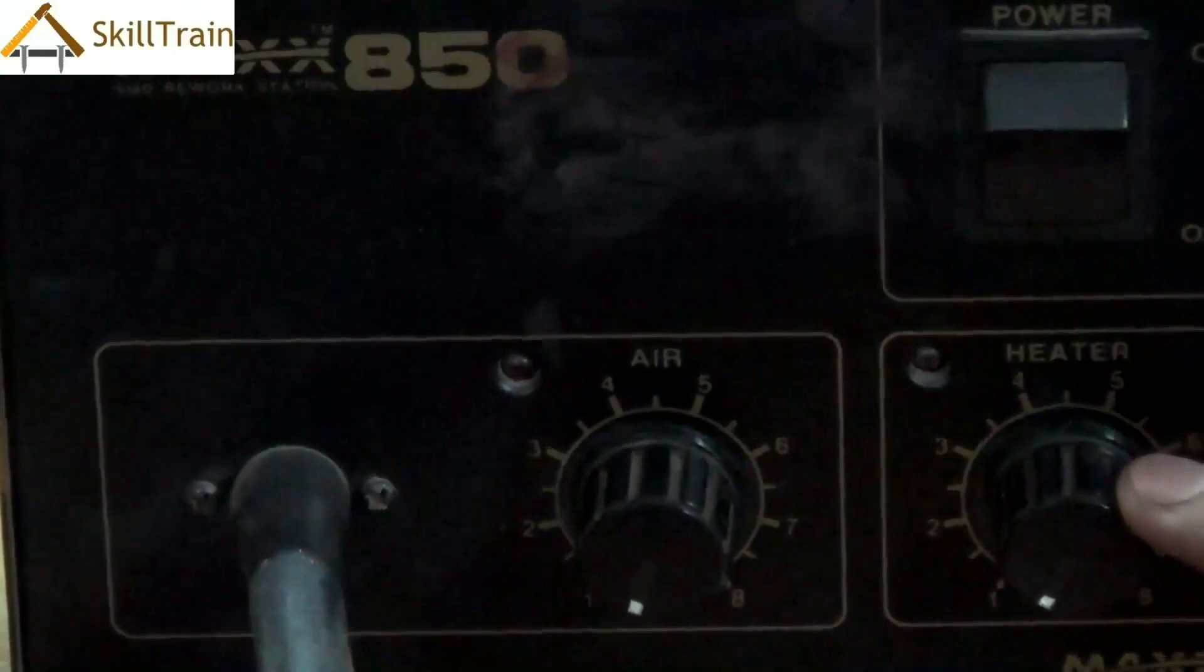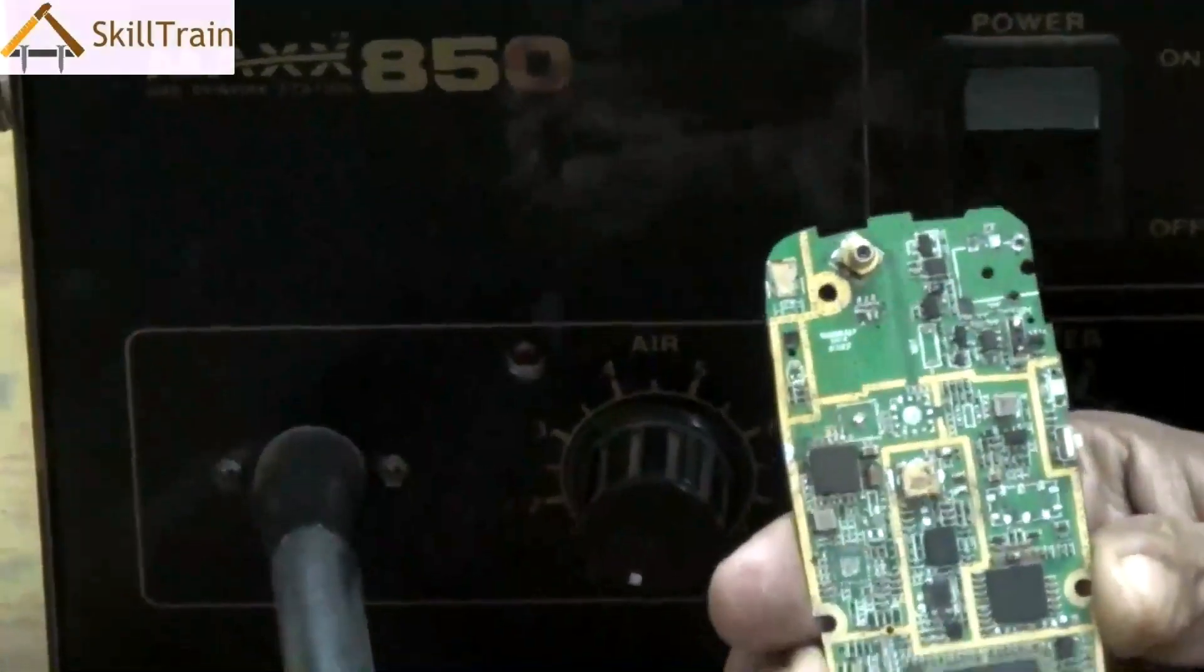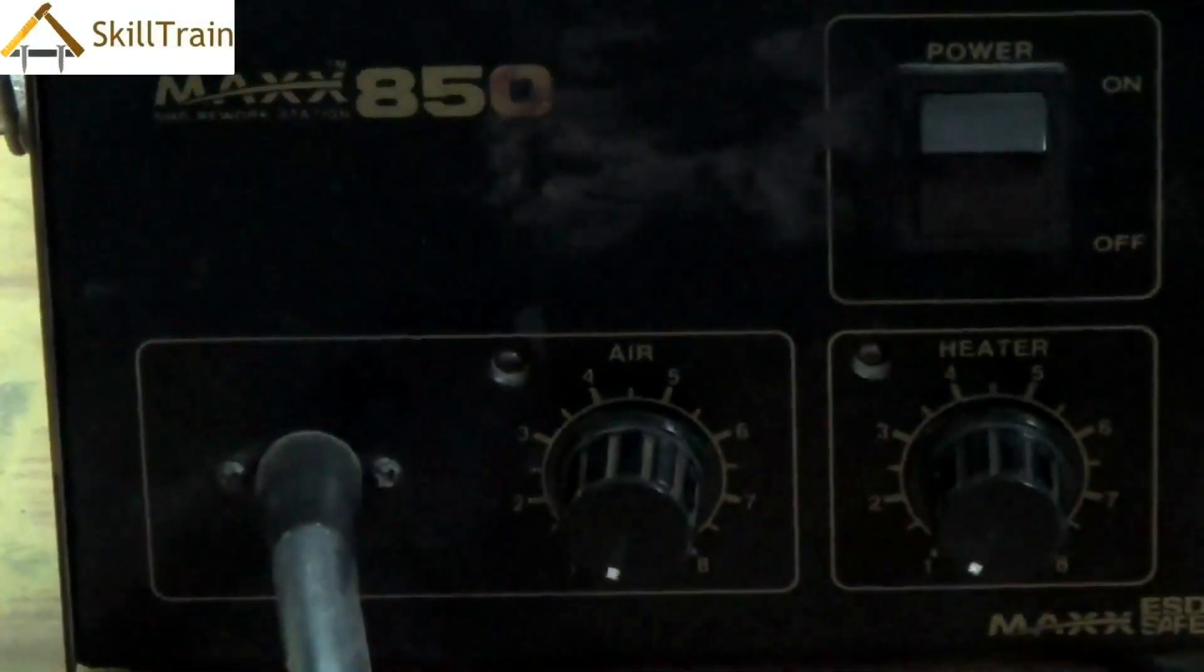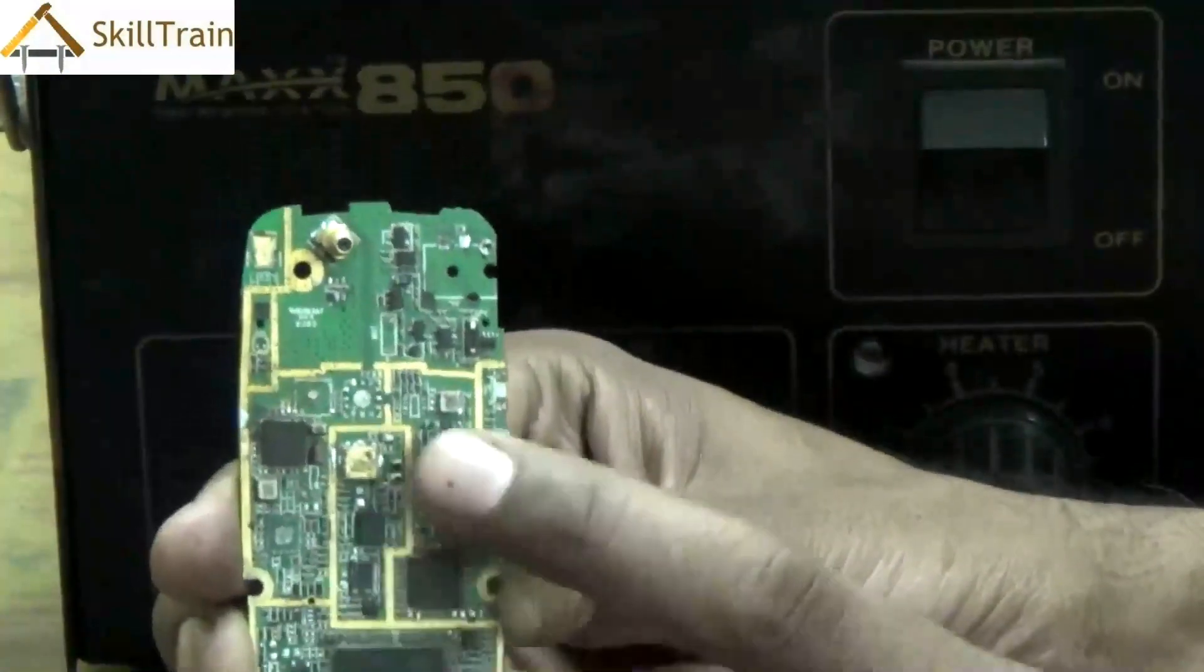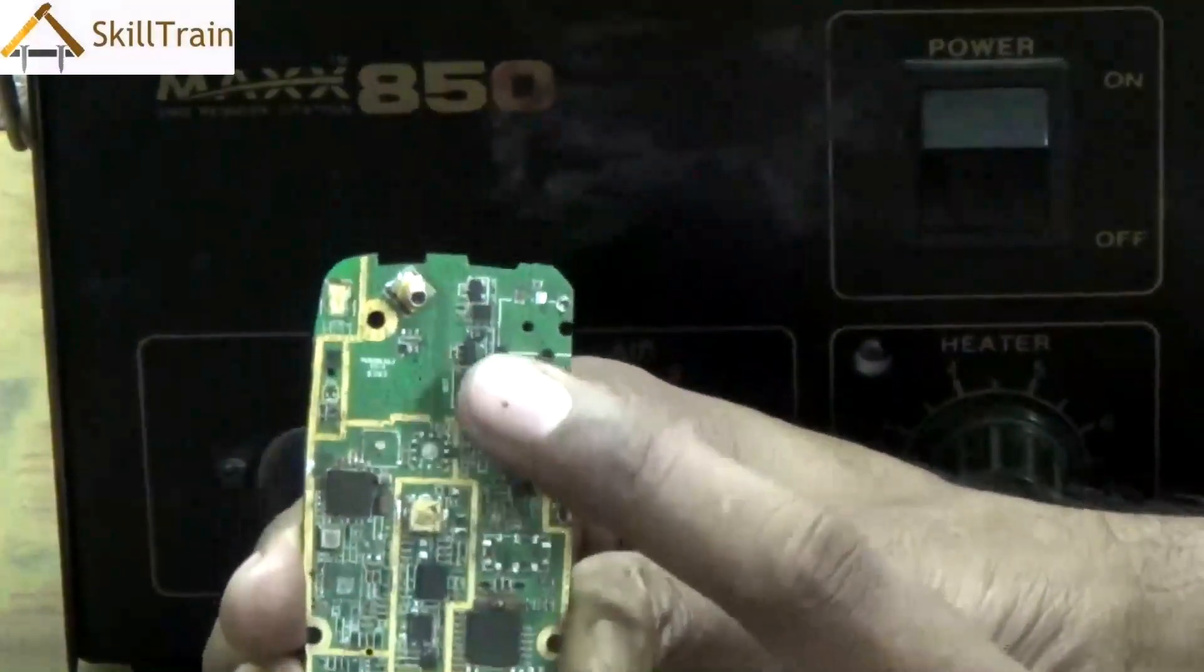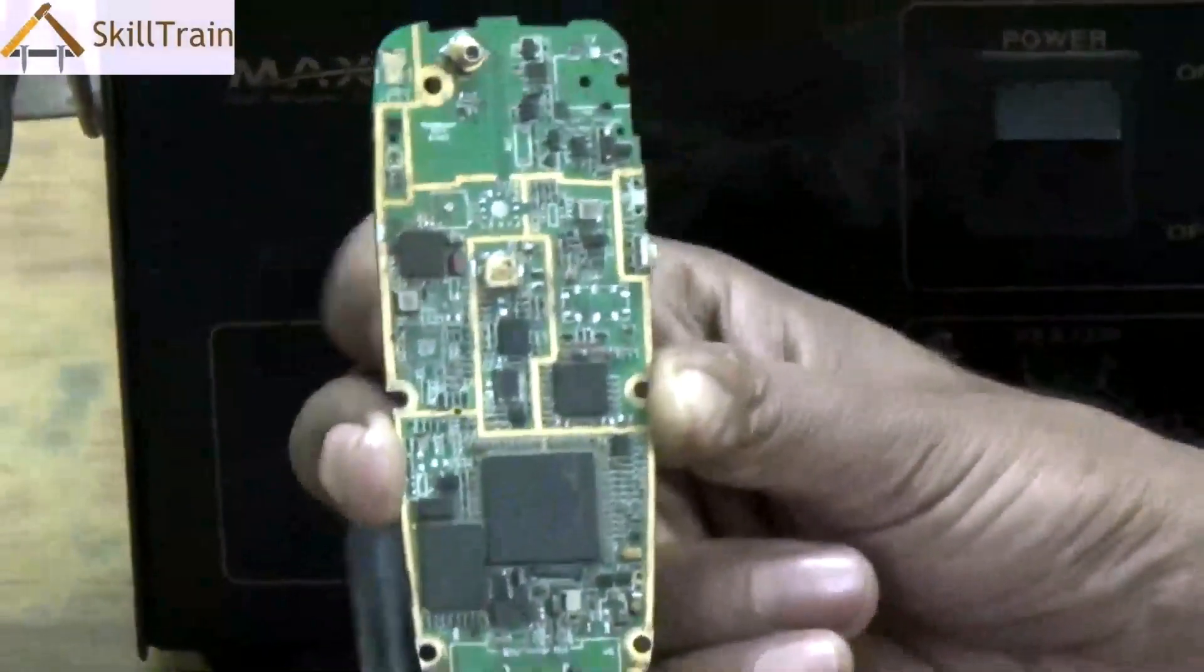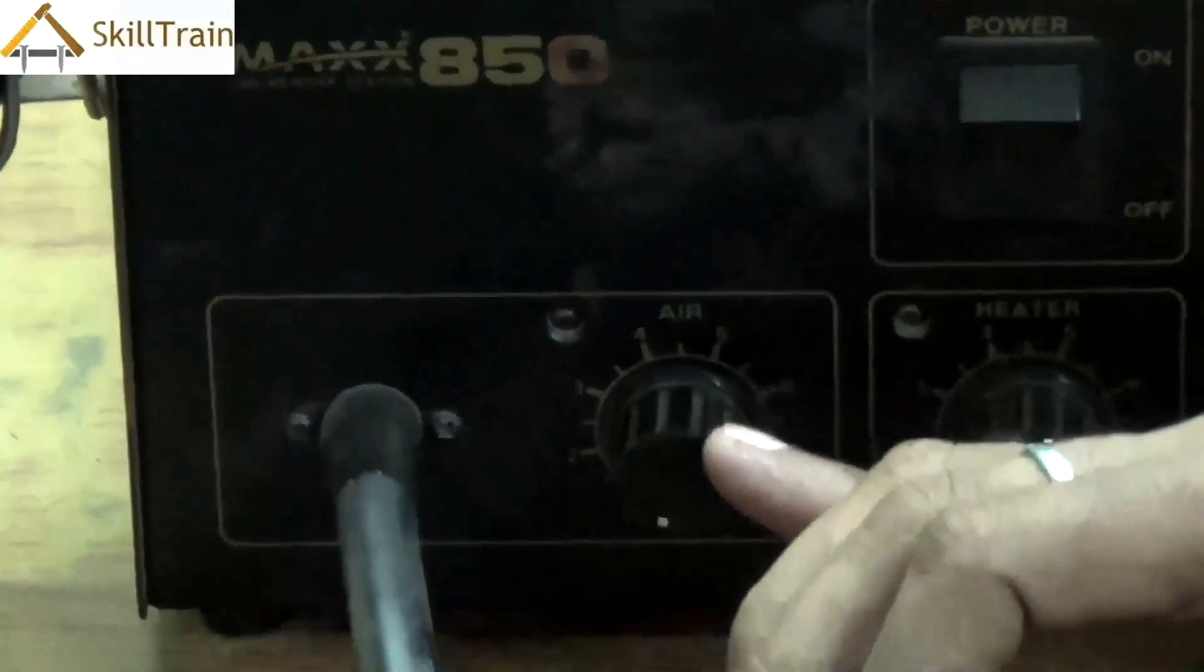Now as we spoke earlier typically when you need to remove any component from a PCB it's important to blow hot air onto the PCB. This will ensure that whatever is holding the component melts and you would be able to easily remove the component out of the PCB. So depending on the type of component and type of the glue you will need to adjust the heating element to increase or decrease the amount of heat that is generated by the hot air gun.